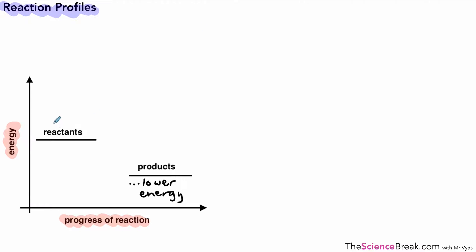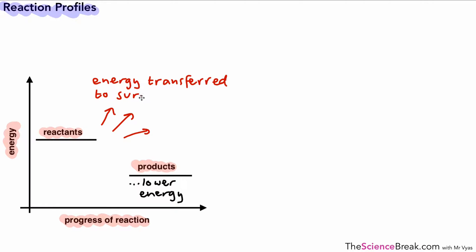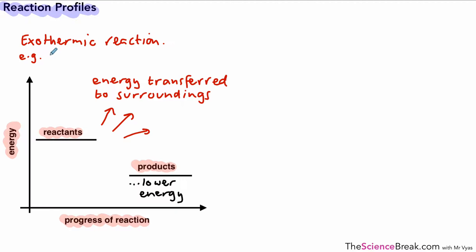That means there must be a loss of energy somewhere. In actual fact we don't refer to it as a loss of energy — we talk about the reactants and the products being at different energy levels. In this case the products are at a lower energy level, so we talk about a transfer of energy to the surroundings. You can imagine for a reaction, for example a combustion reaction, this would be transferred as heat and light to the surroundings. So this is an example of an exothermic reaction. We can see this because the products' energy level is lower than that of the reactants, meaning energy must have been transferred into the surroundings.